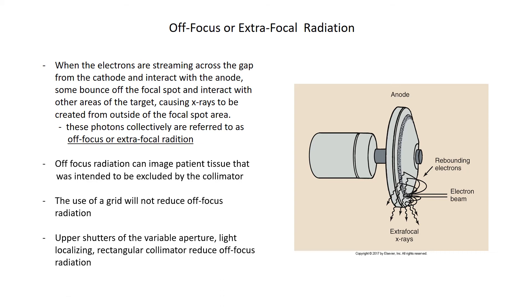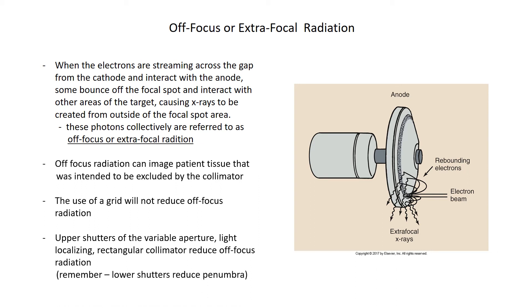To reduce off-focus radiation, use your variable aperture light-localizing rectangular collimator. Remember you have upper shutters and lower shutters — the upper shutters help reduce off-focus radiation, while the lower shutters help reduce penumbra.